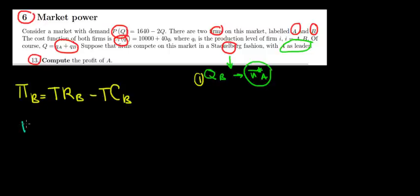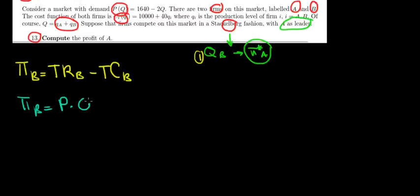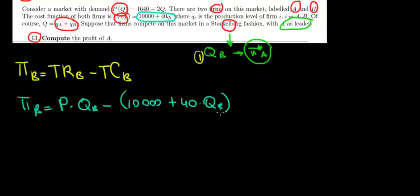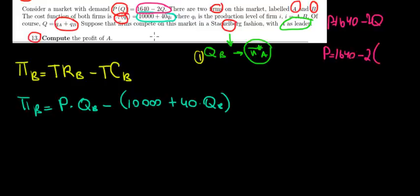The profit of player B is equal to price times the quantity of player B, minus the total cost of company B, which is 10,000 plus 40 times QB. The price is equal to 1640 minus 2Q. Since the total quantity Q equals QA plus QB, the price is actually 1640 minus 2(QA + QB). Opening the brackets, that's 1640 minus 2QA minus 2QB.